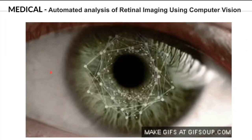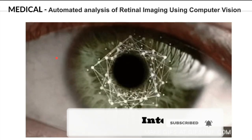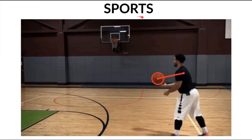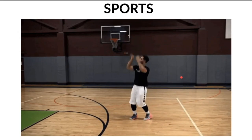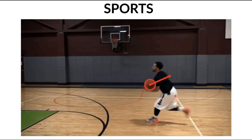Computer vision can be applied to the medical industry in multiple ways, such as automating the diagnosis of eye diseases. The next industry is sports. Computer vision is helping coaches track players' positions to increase team performance.